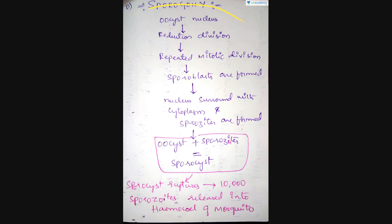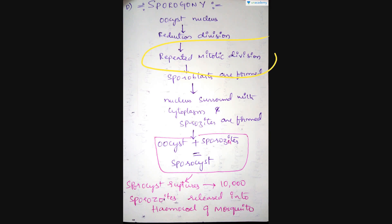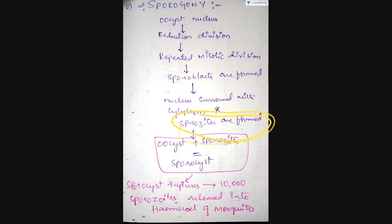The next stage is called sporogony, where the preformed oocyst nucleus undergoes first a reduction division and then repeated mitotic divisions, leading to the formation of a sporoblast. After the formation of the sporoblast, the nucleus surrounds with cytoplasm and sporozoites are formed. This oocyst along with sporozoites is called a sporocyst. The sporocyst then gets ruptured, releasing up to 10,000 sporozoites into the hemocoel of the mosquito.